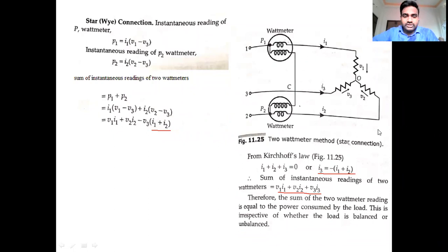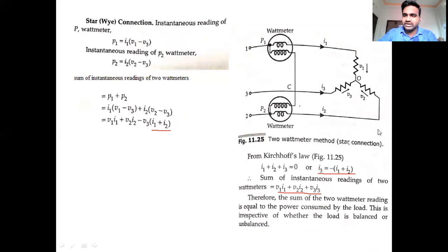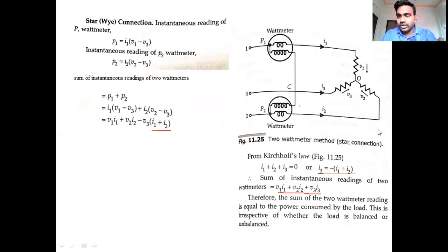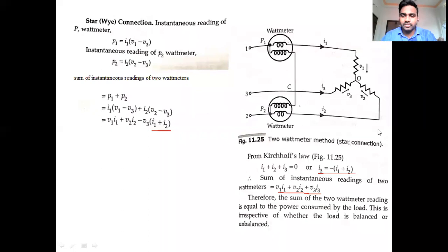Regarding which wattmeter method is widely used: it depends on the application. Blondel's theorem is the ideal condition for a three-phase three-wire system using three wattmeters. For a three-phase four-wire star connected load, we use the three-wattmeter method. For a three-phase three-wire system, we use the two-wattmeter method. The method depends on the application.